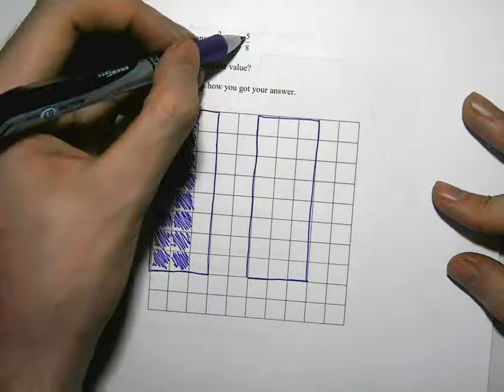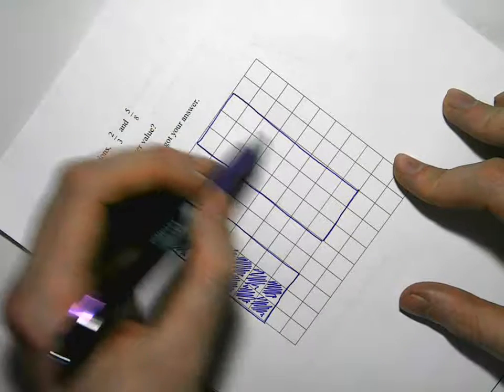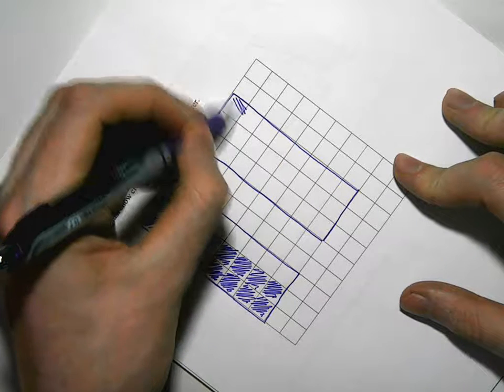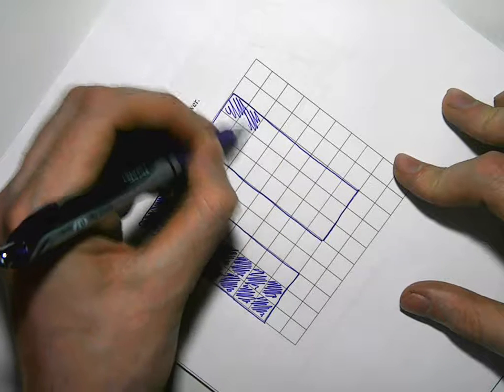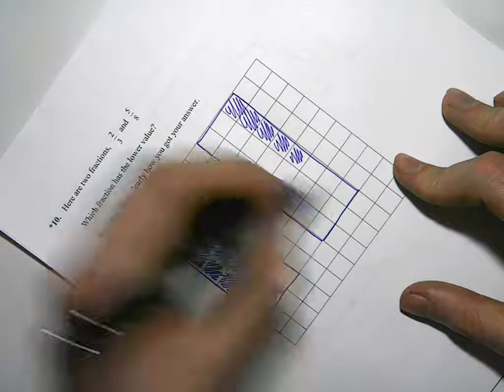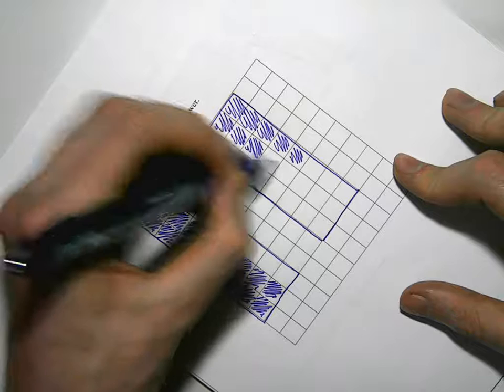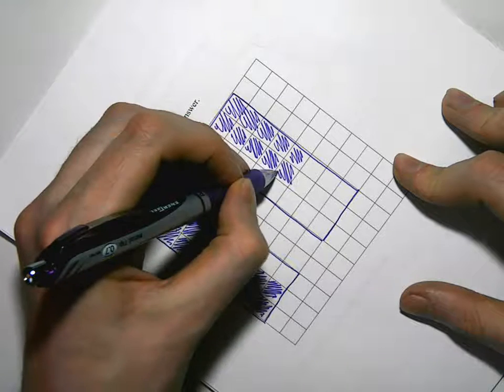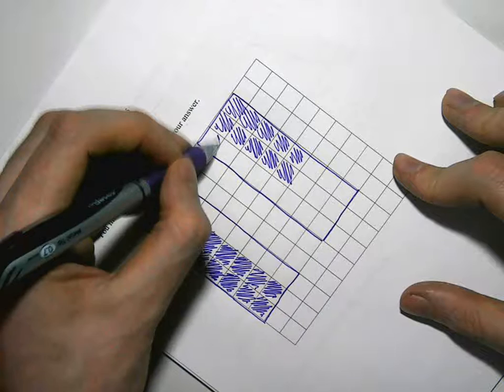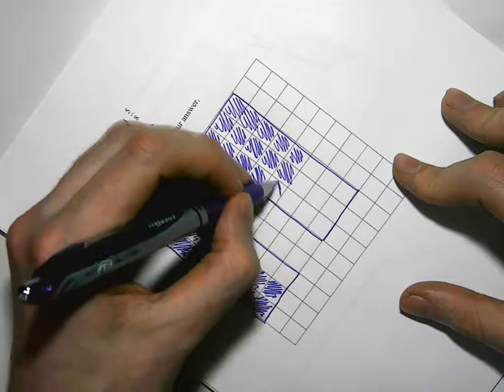Okay, so we're going to do the other one then. 5 eighths. So if we turn the paper the other way, we can do this a bit easier. So turn it this way. For every 8, colour in 5 of them. So colour in 5: 1, 2, 3, 4, 5, 6, 7, 8. 1, 2, 3, 4, 5, 6, 7, 8. And the last one: 1, 2, 3, 4, 5, 6, 7, 8.